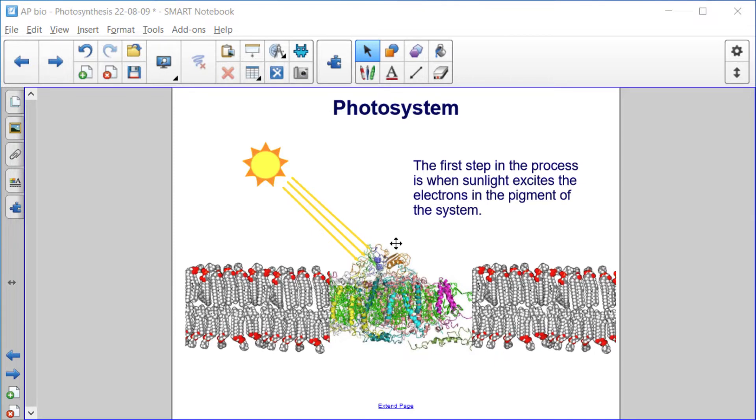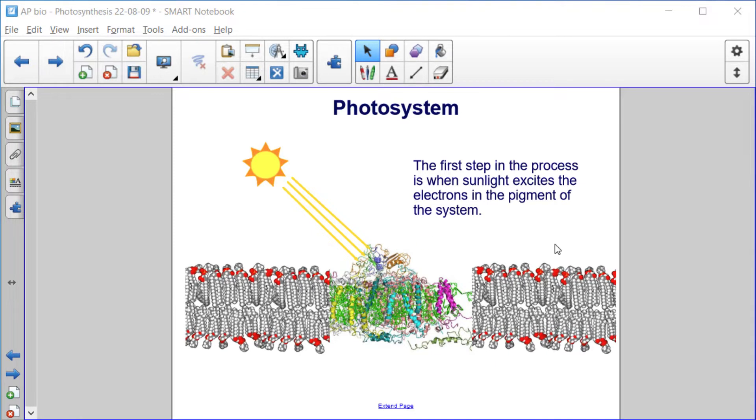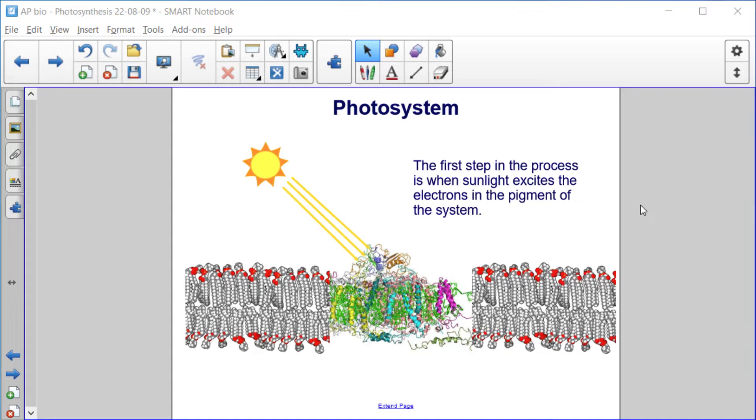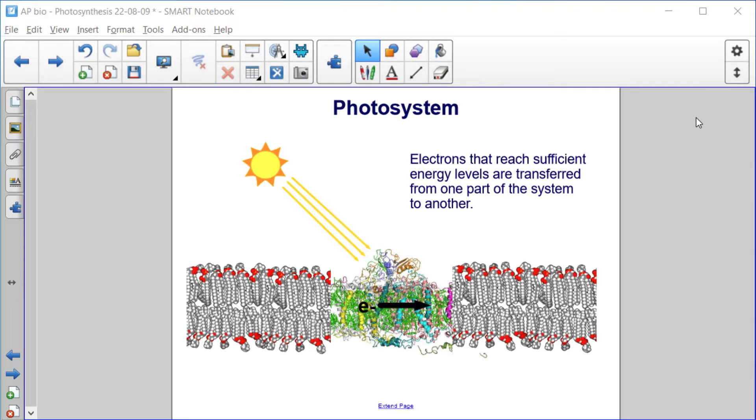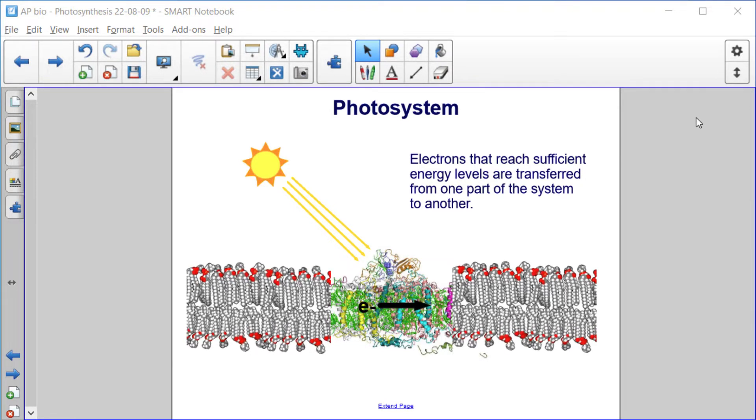That pigment absorbs light from the sun, and in doing so, electrons in the pigment are excited. Electrons that reach sufficient energy levels are then transferred from one part of the system to another.